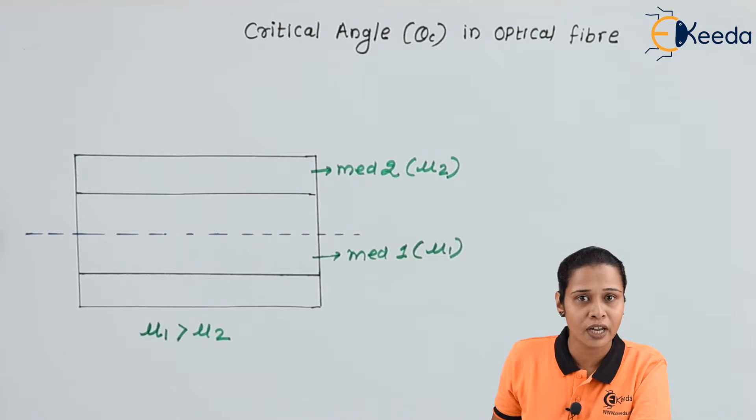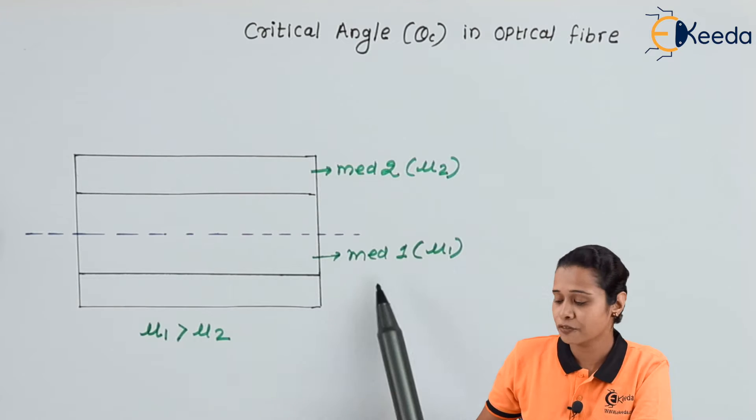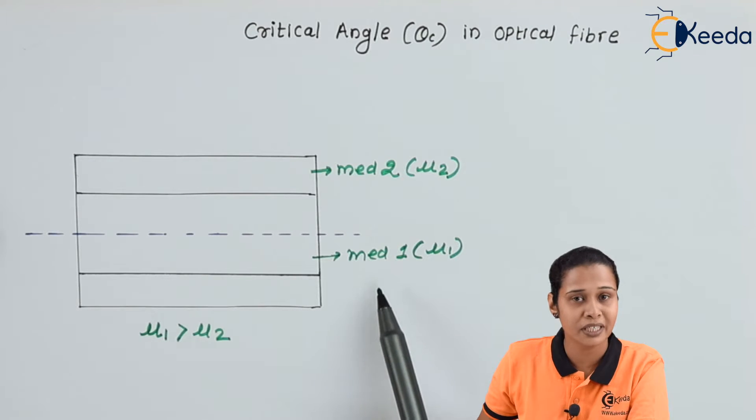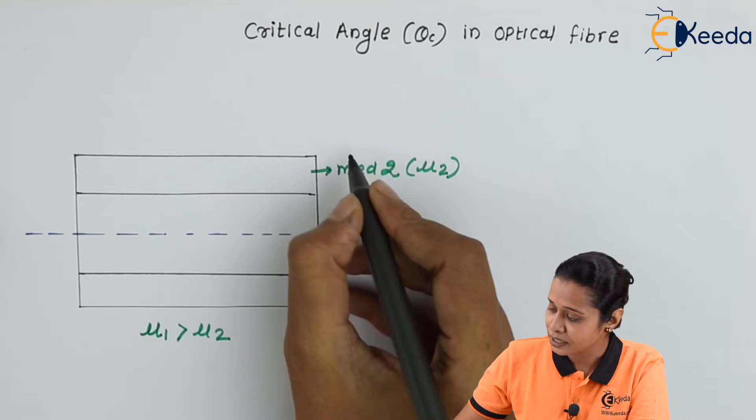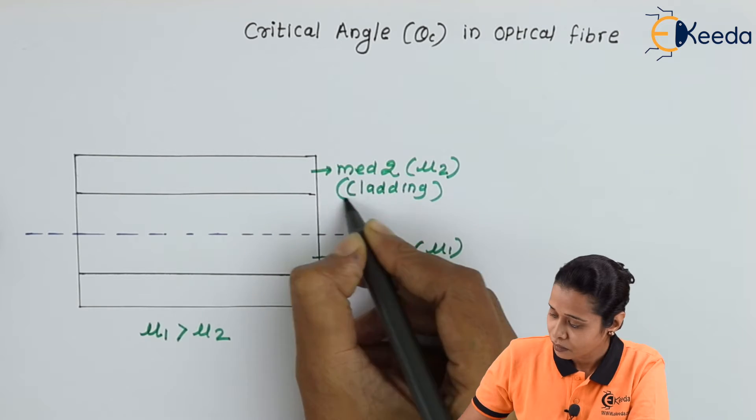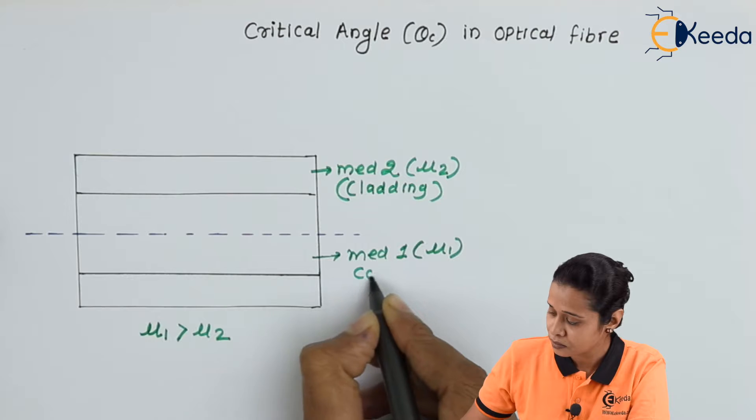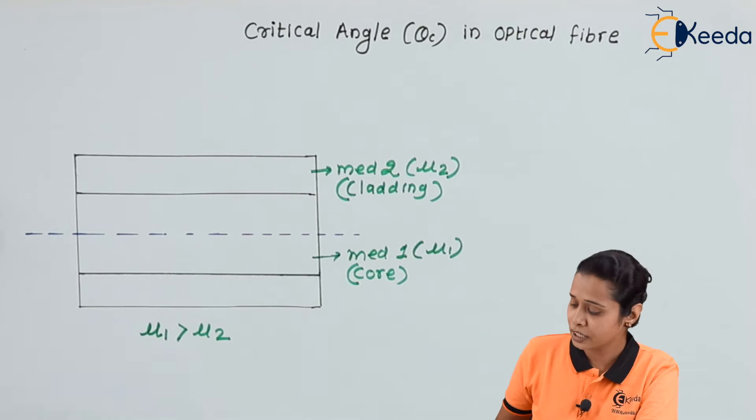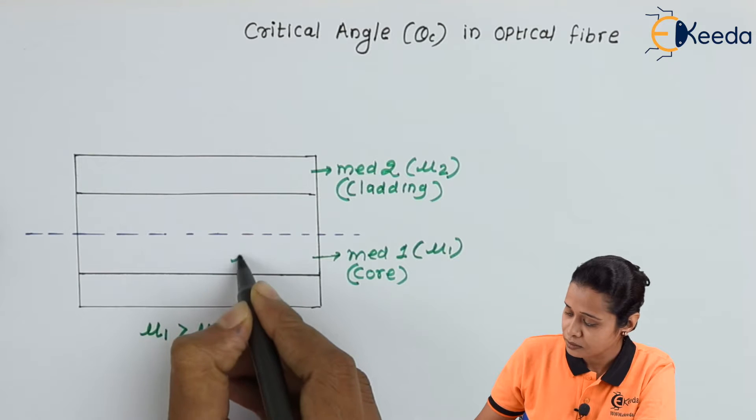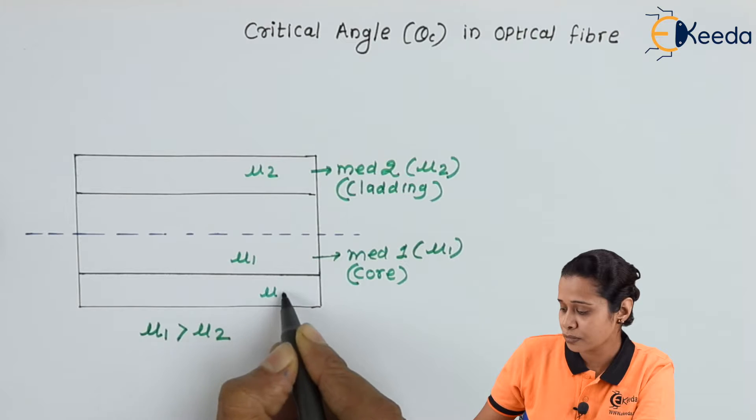If you want to define the concept with the optical fiber, then we can say the second medium is cladding and the first medium is the core in case of the optical fiber. So we can write here cladding, and the first medium which is having higher refractive index is the core. So here we have μ₁ and μ₂.